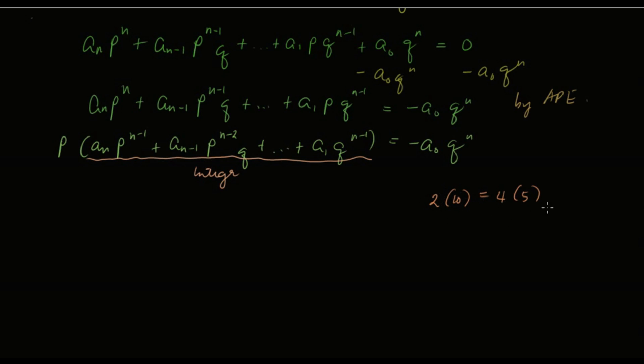Now, but 2 cannot be a factor of 5, because 2 and 5 are relatively prime. So if 2 is not a factor of 5, then 2 must be a factor of 4. We will use this argument here.